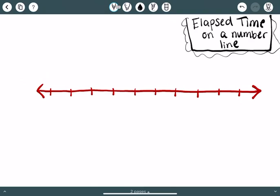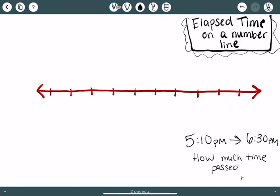Let's say that I started my homework at 5:10 p.m. and I finished my homework at 6:30 p.m. So I'm going to try to figure out how much time passed between 5:10 and 6:30.